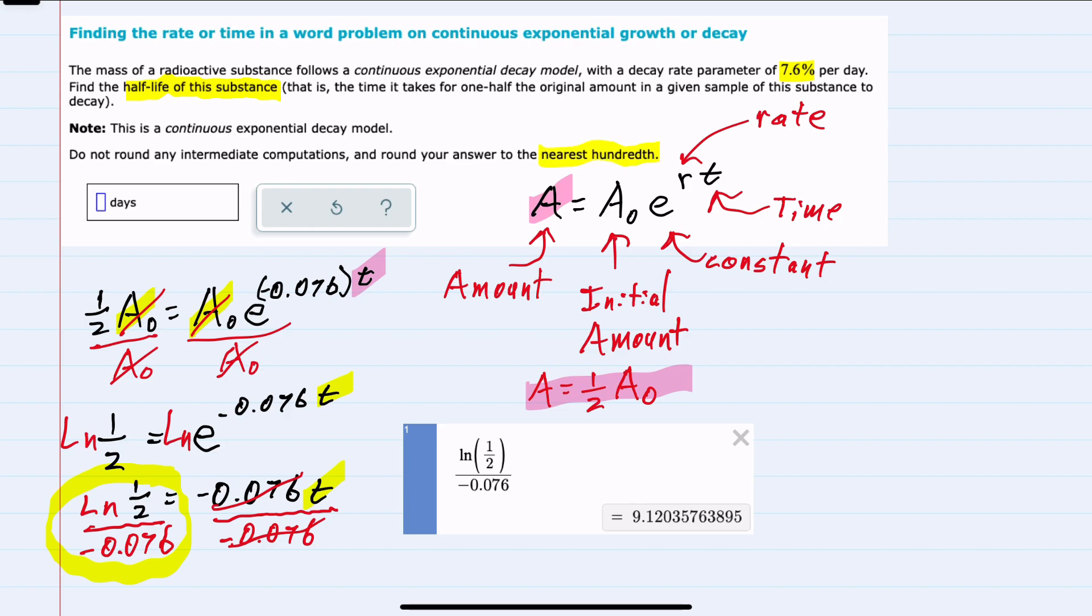Rounding to the nearest hundredth, we have a two in the hundredths place with a zero behind it, so it does not round up. Our time will be 9.12.